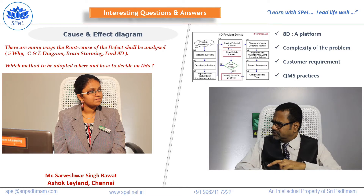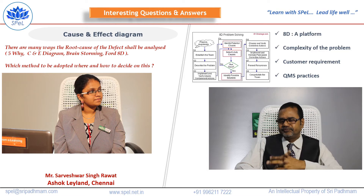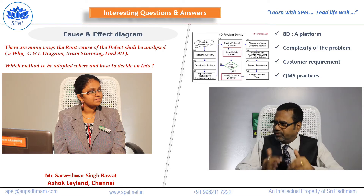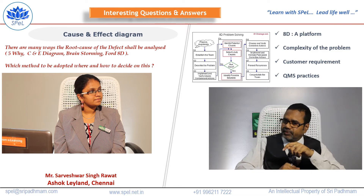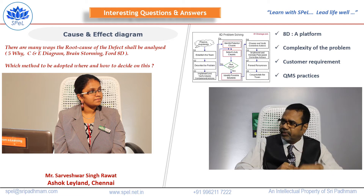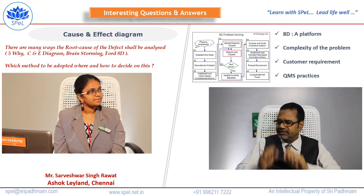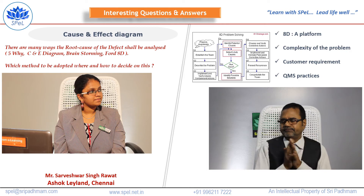We have to decide based on the complexity of the problems. All problems need not be equal in terms of complexity. If customers want something, we have to adopt simply. The organizations' schemas, practices, and quality management system practices are also equally important. Based on this, we have to decide.